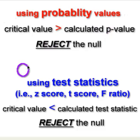But if you're just using specific test statistics, like a z-score or a t-score or an f-ratio, it's just the opposite. If the critical value is less than the calculated test statistic, you're going to reject the null.